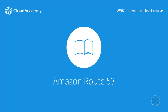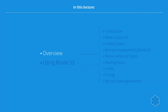Route 53 is Amazon's highly available and scalable domain name system. During this lesson, we will cover a range of topics, from purchasing a domain name to the various types of routing configurations available to support your low-latency and fault-tolerant architectures. Before we get into Route 53, we will do a quick refresher on what DNS is and the general terminology that will be used throughout this lesson.